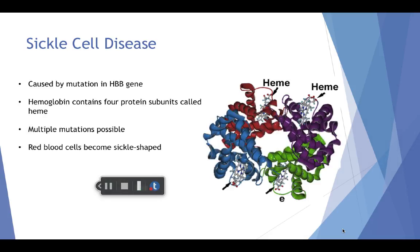Eric has sickle cell disease. The root cause of sickle cell disease is a mutation in the HBB gene. Hemoglobin contains four protein subunits called heme. More specifically, two of them are considered alpha globin and the other two are considered beta globin. Different mutations of the HBB gene can occur resulting in multiple types of beta globin. People that have sickle cell disease have one of the two beta globin subunits replaced by hemoglobin S, and the other can be replaced by numerous other variations of the beta globin subunit, resulting in different strains of sickle cell disease.